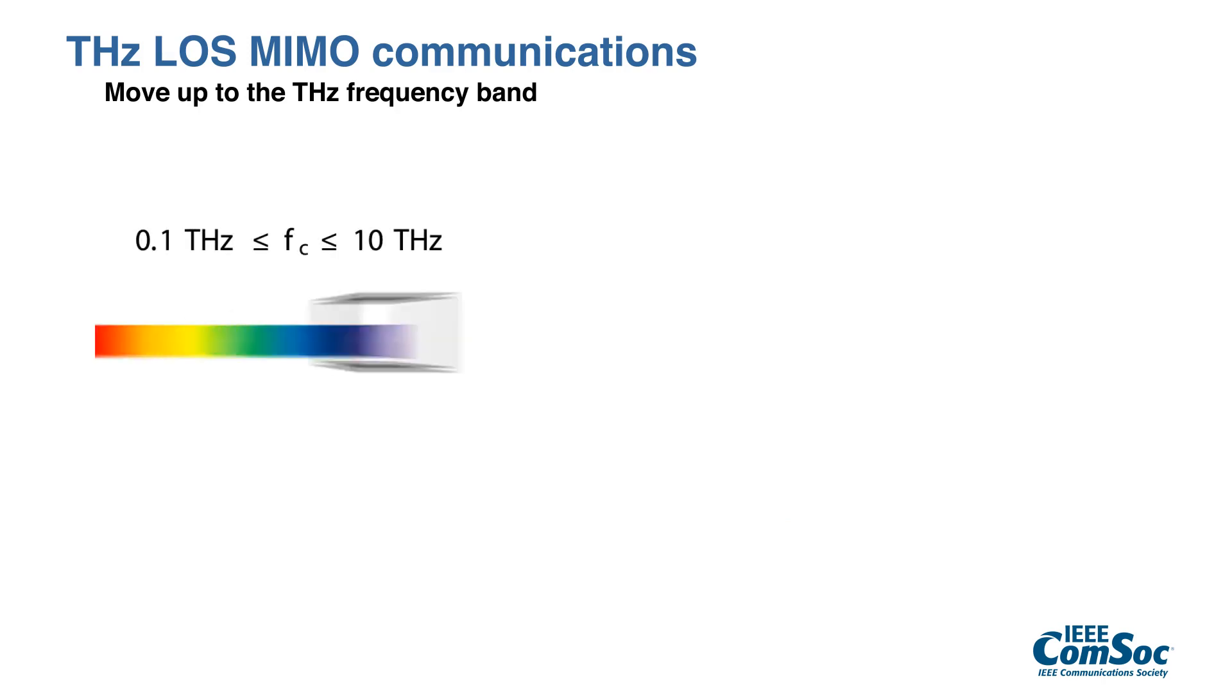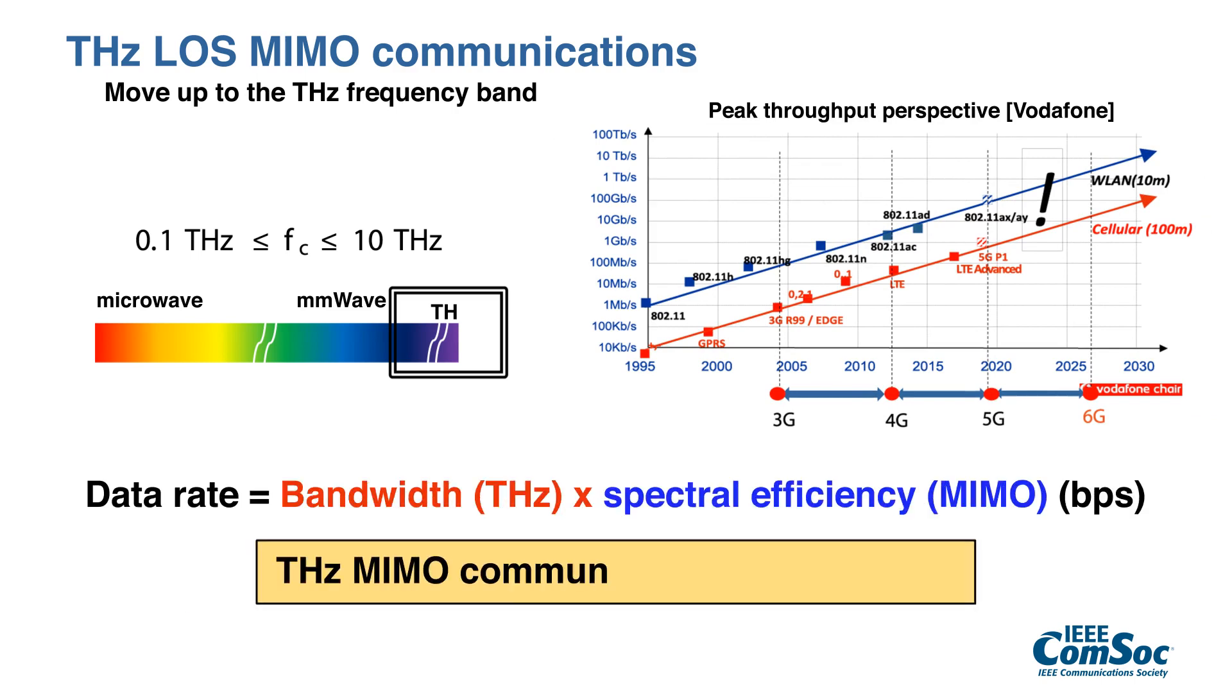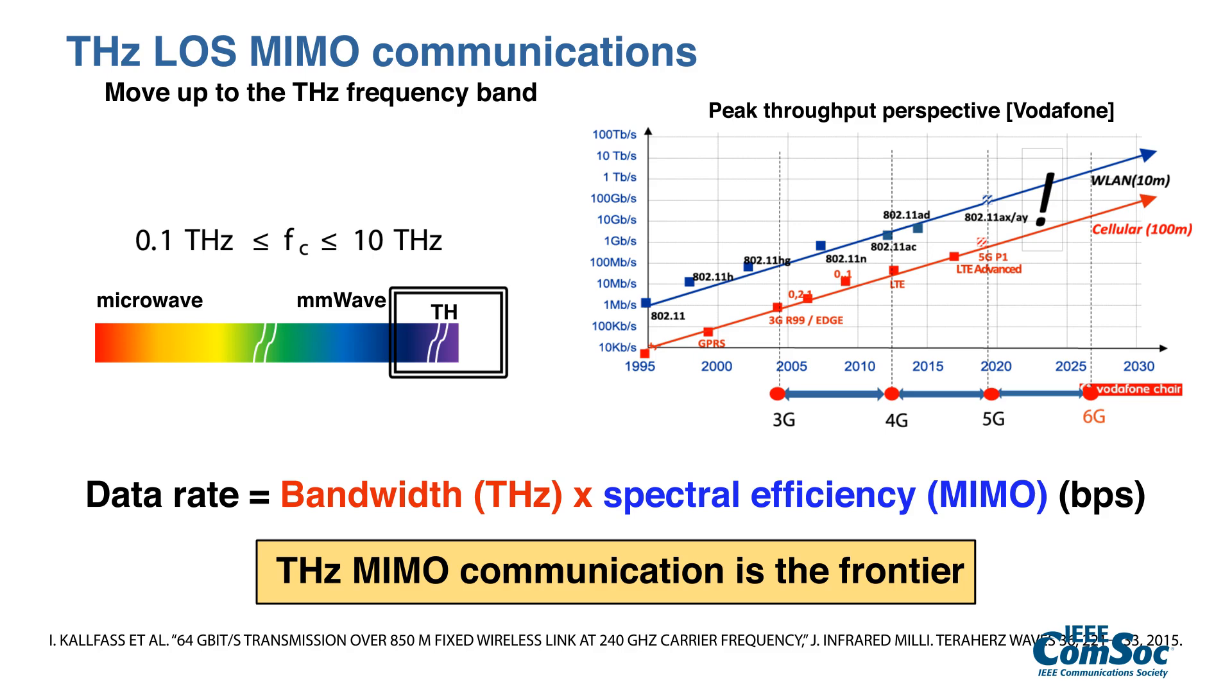Let me briefly explain why Terahertz MIMO communication is needed for next-generation wireless systems. There are two key mechanisms to increase the data rate of a wireless system: either augmenting more bandwidth or improving the spectral efficiency. Spectrum-wise, communication using Terahertz frequency is promising because there are huge amounts of unused spectrum.